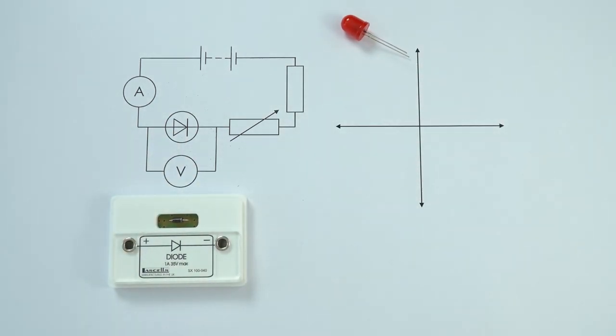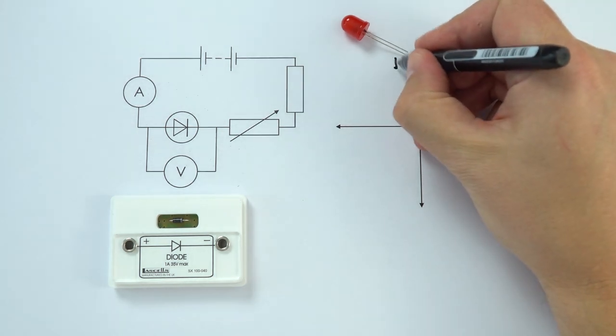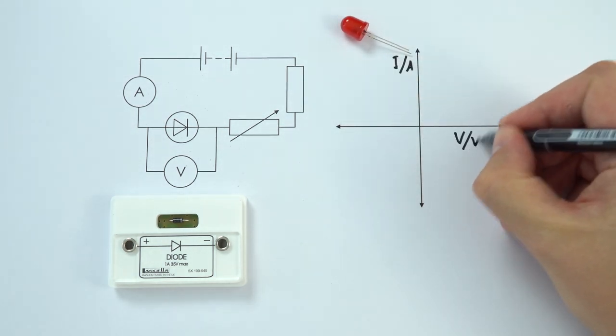So again what we're going to have on the graph here: we're going to have the current measured in amps and the potential difference measured in volts.